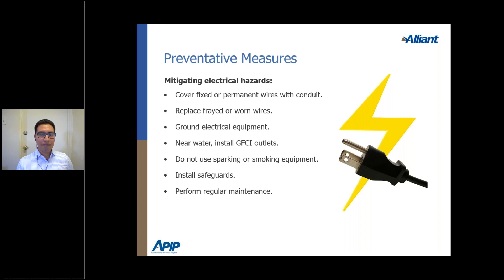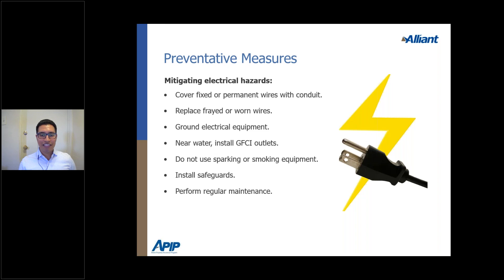Other preventative measures: mitigate electrical hazards in storage rooms, as they can be a source of ignition. Ensure frayed wires are covered or replaced, use permanent conduit, and make sure all electrical equipment is grounded. Install GFCIs near outlets near water or where water could splash. Install safeguards, ensure no sparking or smoking equipment is near flammable liquids and hazards, and perform regular maintenance to keep hazards mitigated.